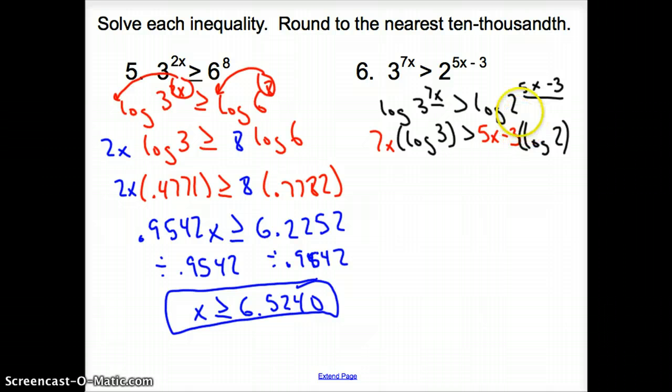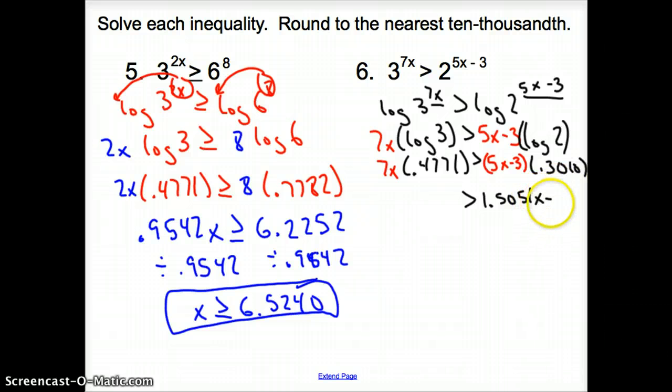Let's change those logs into numbers. We have 7x times log of 3 which is 0.4771 is greater than 5x minus 3 times log of 2 which is 0.3010. Tricky part here is on this side we have to distribute those decimals to both the 5x and the 3. So on the right side of the equation, we will have 1.5051x minus 0.9031 and over here we have 3.3398.